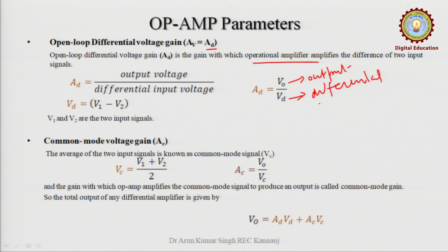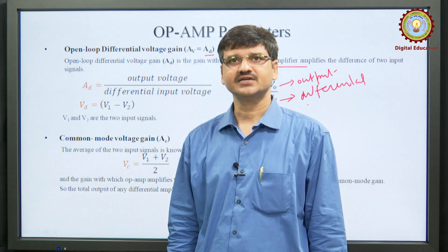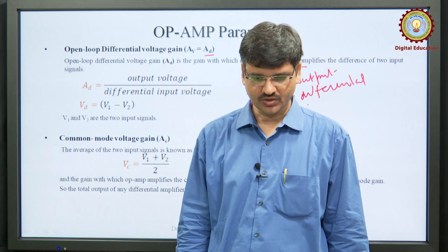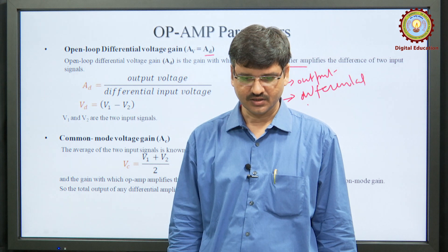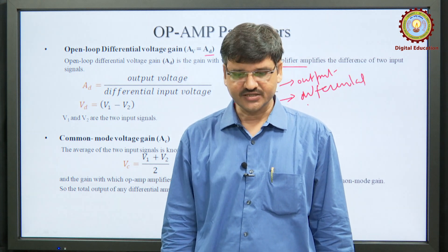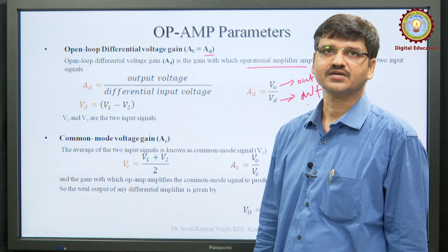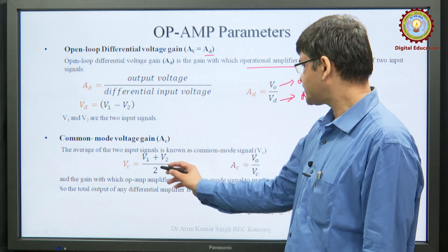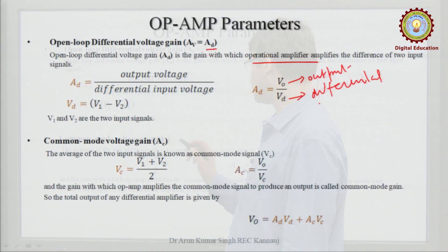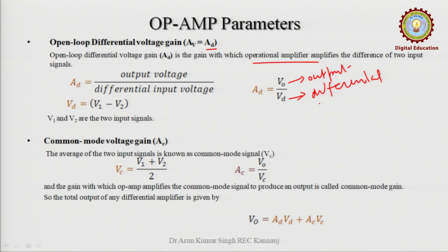The second parameter is common mode voltage gain. It is defined as the average of the two input signals and is known as the common mode signal. That is, V_C is equal to V1 plus V2 upon 2. The voltage gain A_C is defined as the ratio of the output voltage V_0 upon the common mode signal V_C.